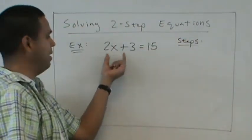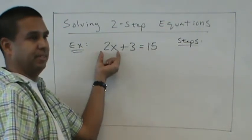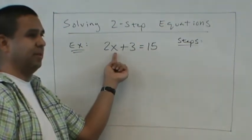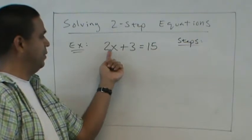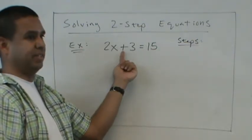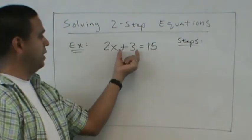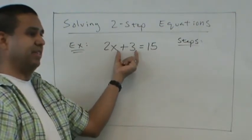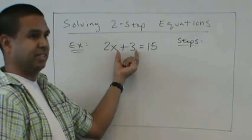We notice that we have this multiplication, right? This is 2 times the number. 2x means 2 times the number. So that's multiplication, and that's an addition. So the inverse or opposite of addition would be? Subtraction.